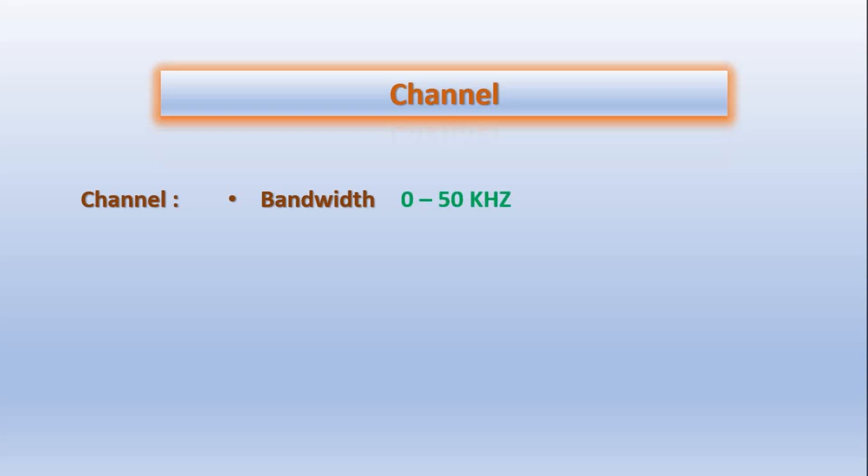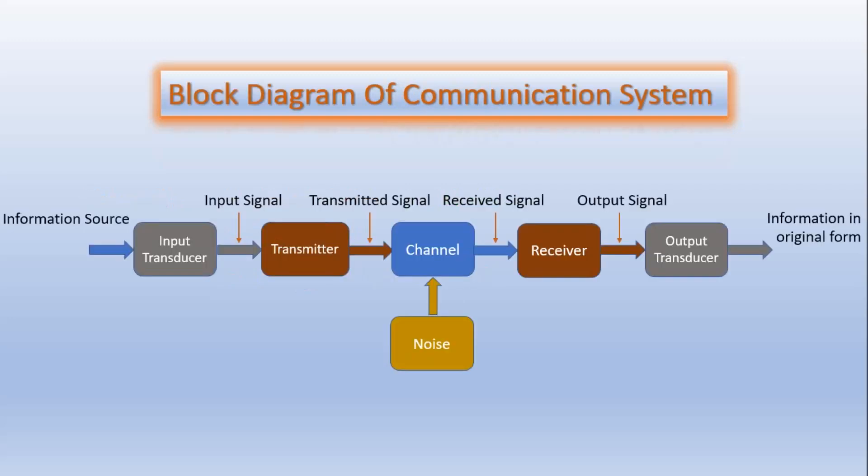If the signal is digital in nature, then data rate is an important factor. This is the maximum supported data flow by the channel. Another specification is length of the channel. These are some of the important specifications for the communication channel.